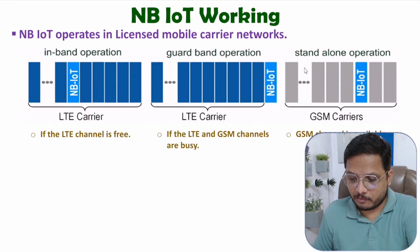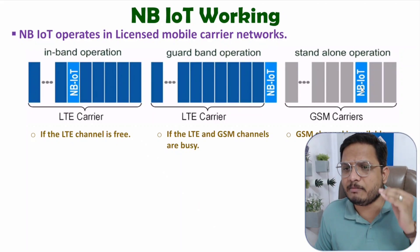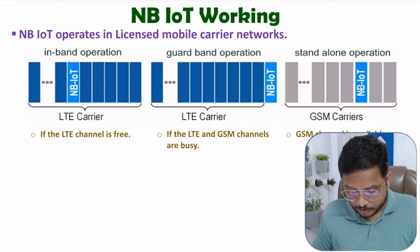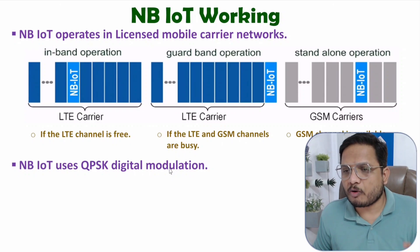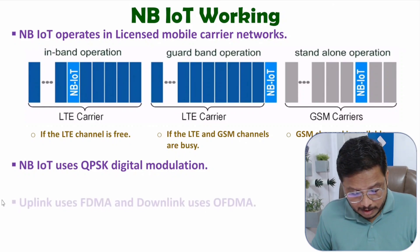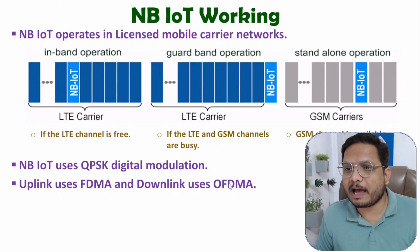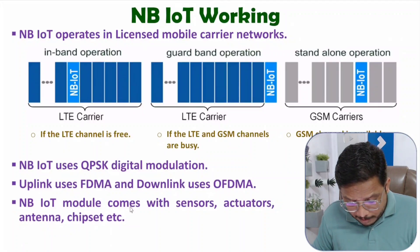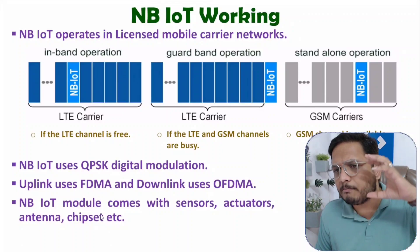Various GSM channels are available, and if a GSM channel is free, NB-IoT can operate on it. NB-IoT uses QPSK — quadrature phase shift keying — digital modulation. For uplink, it uses FDMA (frequency division multiple access), and for downlink, it uses orthogonal FDMA. An NB-IoT module includes sensors, actuators, an antenna, and a chipset, and communicates with the base station.